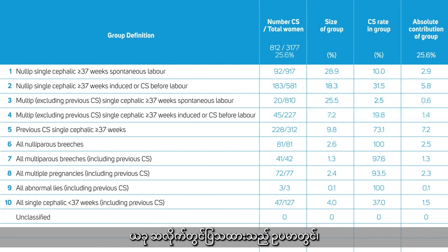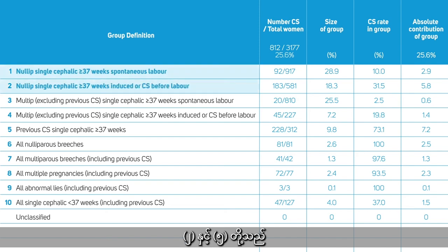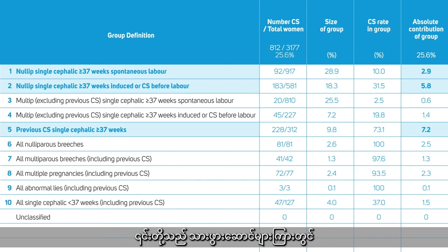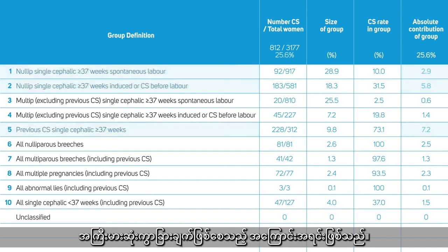In the example shown in the slide, we see that groups 1, 2, and 5 contribute two-thirds of the cesarean section rate, and they are the source of the largest variation between units.